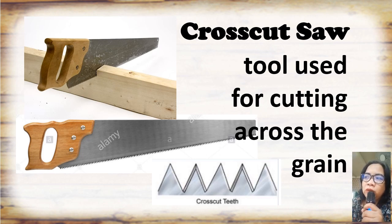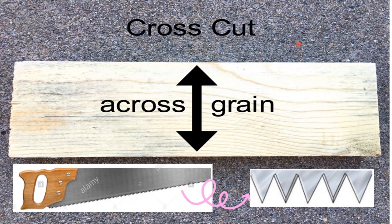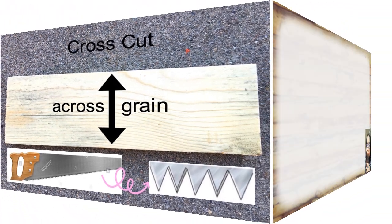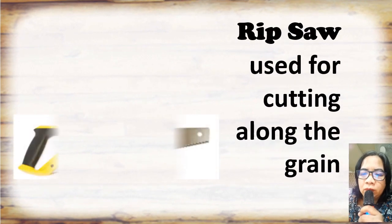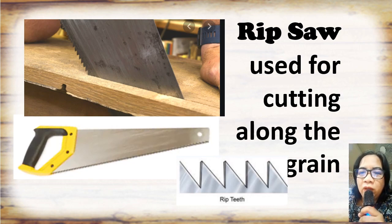Crosscut saw: a tool used for cutting across the grain. Rip saw: used for cutting along the grain.